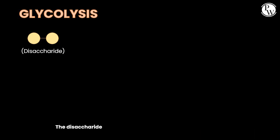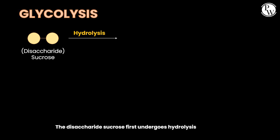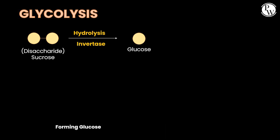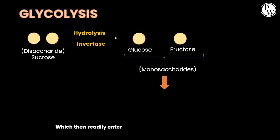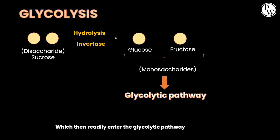The disaccharide sucrose first undergoes hydrolysis, using the enzyme invertase, forming glucose and fructose. Both of which are simple monosaccharide units, which then readily enter the glycolytic pathway.